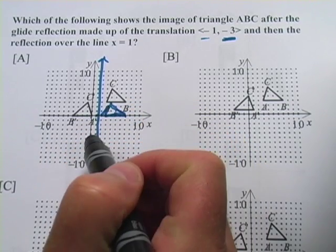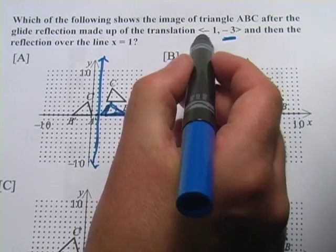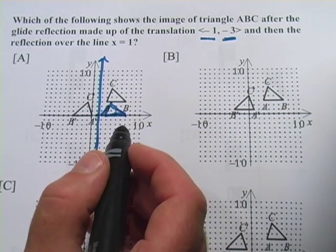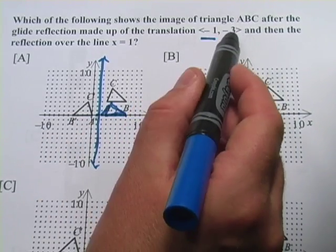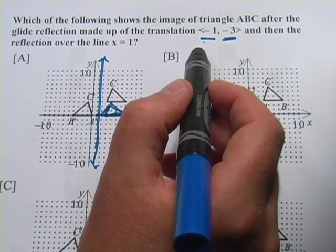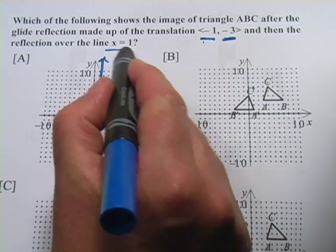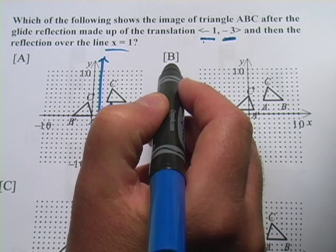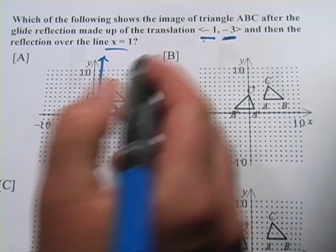That would be a translation of negative one, aha. So that seems to fit exactly what we wanted to do. This translation of down three and one to the left makes it line up perfectly for this reflection over the line x equals one in A.